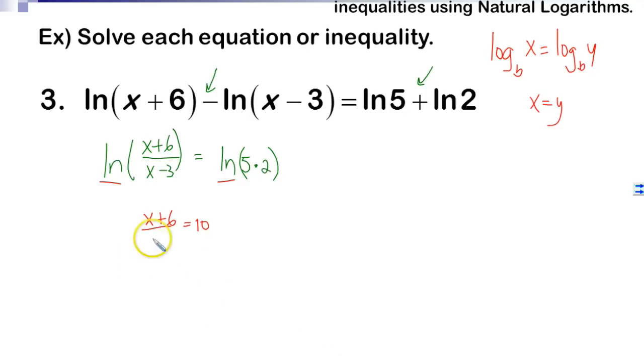So x minus 3 here, I'm going to have 10 over 1 and I'm going to cross multiply. So I'm going to have x plus 6 times 1 equals 10 times x minus 3.